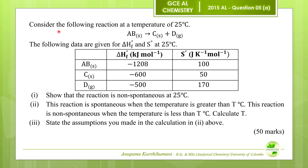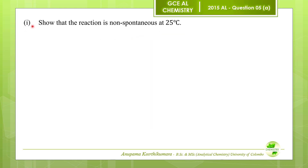Consider the following reaction at a temperature of 25°C: AB solid produces C solid and D gas. The following data are given for the standard enthalpy change of formation and standard entropies at 25°C. Question number one: show that the reaction is non-spontaneous at 25°C.